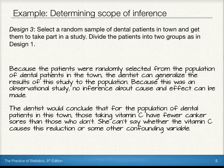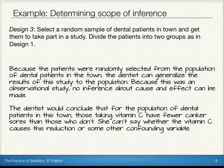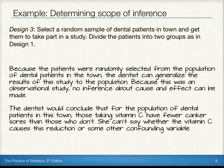Because the patients were randomly selected from the population of dental patients in town, the dentist can generalize the results of the study to the population. And because this was an observational study, we have to note that no inference about cause and effect can be made. The dentist would conclude that for the population of dental patients in this town, those taking vitamin C have fewer canker sores than those who don't. She can't say whether the vitamin C causes this reduction or some other confounding variable does, because again, this was an observational study.